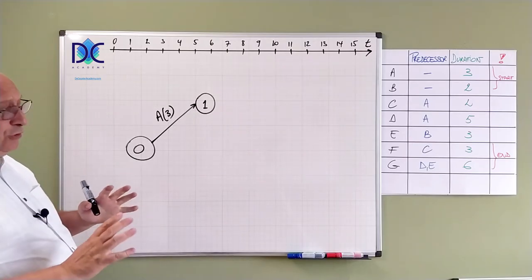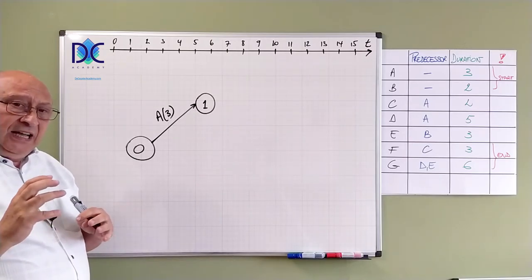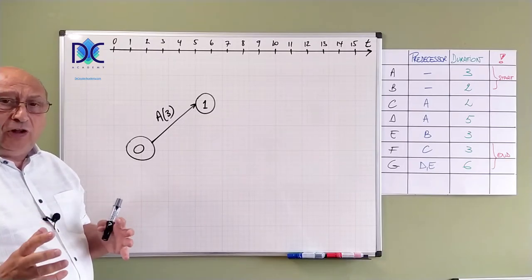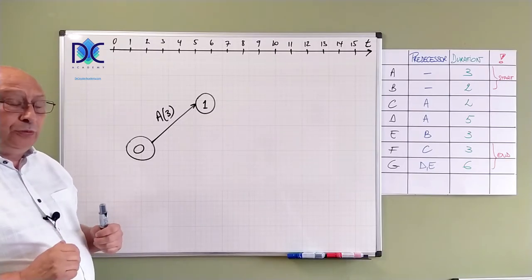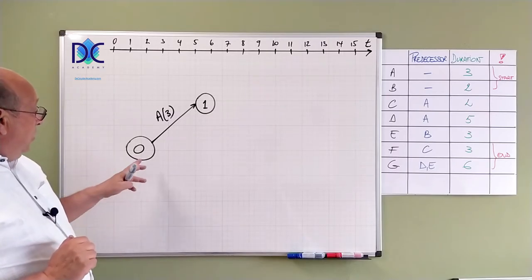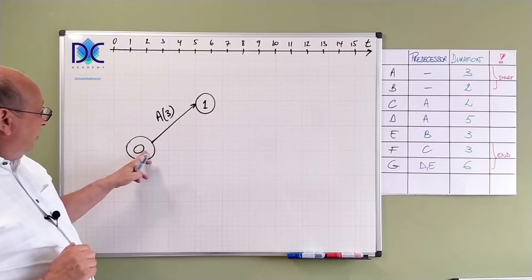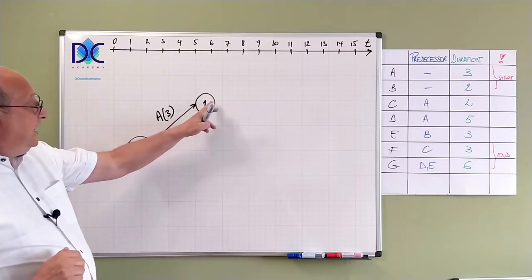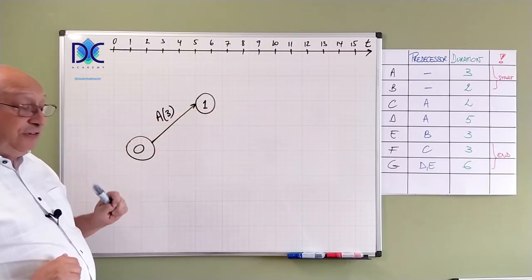Now, here we have to be careful because it's not so easy to follow all the rules. There are a lot of rules that we have to follow and we have to be careful about that. So we have here a start point where A starts. In point one, A finishes.